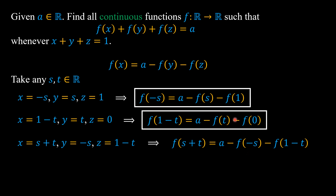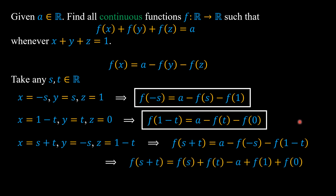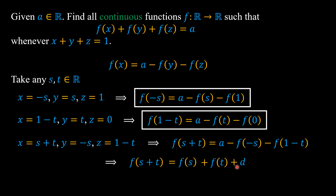Since f(-s) can be represented as a known quantity and f(1 - t) can also be represented as a known quantity, we have f(s + t) = f(s) + f(t) - a + f(1) + f(0). We denote the constants at the end of this equation as d, and by adding d to both sides we obtain a simplified functional equation.